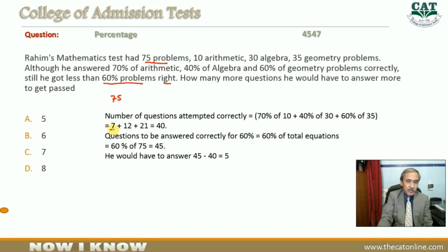This is your first part which is 70% of 10, so 70% of 10 is 7. Then 40% of 30, so 40% of 30 is 12, and 60% of 35 is 21. So total he answered 40 questions correctly.